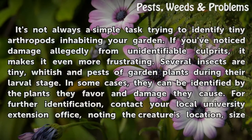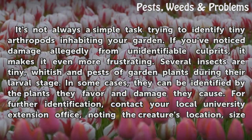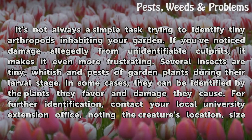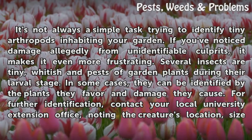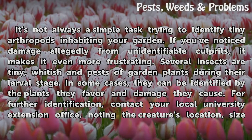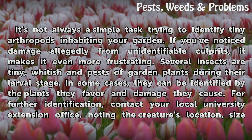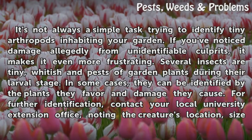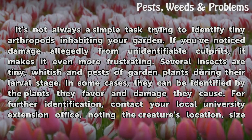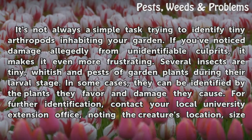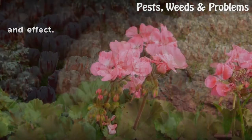It's not always a simple task trying to identify tiny arthropods inhabiting your garden. If you've noticed damage from unidentifiable culprits, it makes it even more frustrating. Several insects are tiny, whitish, and pests of garden plants during their larval stage. In some cases, they can be identified by the plants they favor and the damage they cause. For further identification, contact your local university extension office, noting the creature's location, size, and effect.